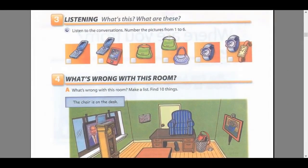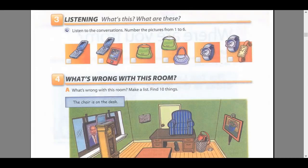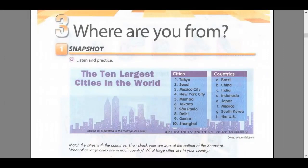Units 1 to 2, Progress Check. Page 15, Exercise 3, Listening: What's this? What are these? Listen to the conversations. Number the pictures from 1 to 6. One: What's this? It's a purse. Two: What's this? It's a cell phone. Three: What are these? They're cell phones. Four: What's this? It's a watch. Five: What are these? They're purses. Six: What are these? They're watches.